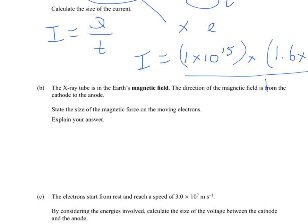State the size of the magnetic force on the moving electrons and explain your answer. Well, it should be 0. So this is a state question, so there's no calculations. That always gives you a good clue, but it will be 0 newtons, if we're being strictly correct, including our units.